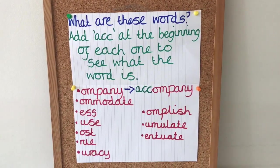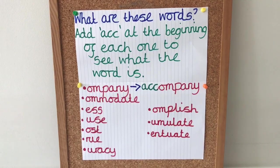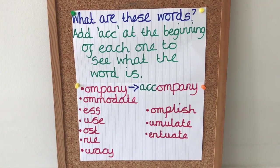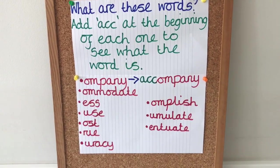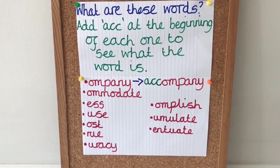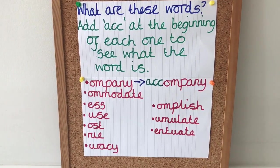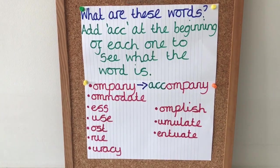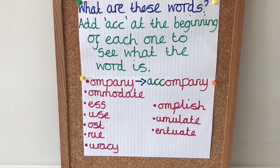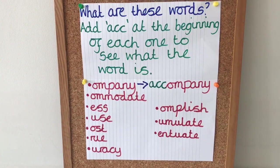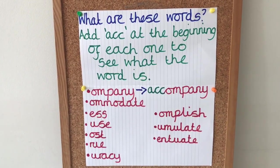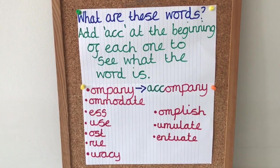So for our next task, you will need a fresh piece of paper and your pen. Now it's your turn — what are these words? For each word, the first few letters have been removed. Your task is to add 'acc-' at the beginning of each one to see what the word is. The first one has been done for you: 'acc-' was originally removed, leaving the letters O-M-P-A-N-Y. When we add on 'acc-', that returns to being the word 'accompany'. Can you finish off these words with 'acc-' at the start? Pause the video and continue with your next task. Good luck.